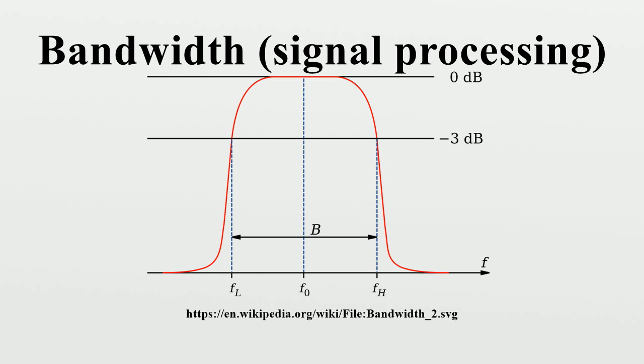This is the bandwidth of a device divided by its center frequency. For example, a passband filter that has a bandwidth of 2 MHz with center frequency 10 MHz will have a fractional bandwidth of 2 tenths, or 20%. In communication systems,